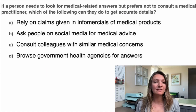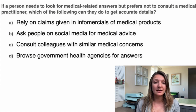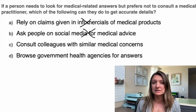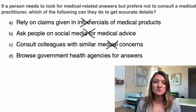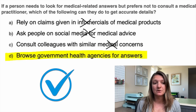Question two: if a person needs to look for medical answers but prefers not to consult a medical practitioner, which of the following can they do to get accurate details? Relying on claims in infomercials for medical products won't give you the full picture. Asking people on social media for medical advice — definitely don't do that, you have no idea where their sources came from. Consulting colleagues with similar medical concerns is also unreliable for the same reason. Browsing government health agencies for answers is really the only correct answer because all those answers have been validated. So D is our correct answer.